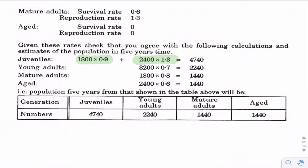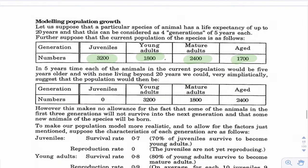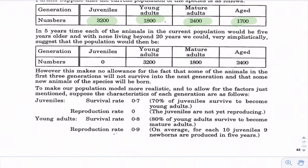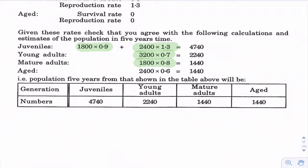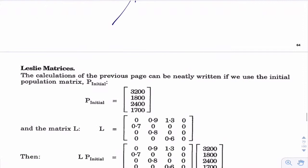Note that Leslie matrices in real life are sometimes based on just the numbers of females because we're talking about reproduction rates, but here we've got total numbers. The young adults figure is all the juveniles that survive: 3,200 times 0.7. For mature adults: 1,800 young adults surviving at 0.8 gives 1,440. For aged: the mature adults surviving at 0.6 also gives 1,440. These numbers show how many of each group will be in the population in five years time.